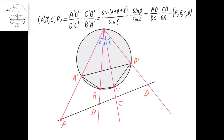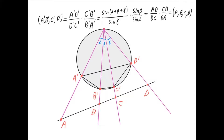And now we can apply the law of sines for each of the four segments here. We know that a prime d prime equals two times r times the sine of this angle alpha plus beta plus gamma. Similarly, c prime b prime equals two r sine of beta, d prime c prime equals two r sine of gamma, and b prime a prime equals two r sine of alpha. When we cancel out the two r's everywhere, we get that this ratio equals sine of alpha plus beta plus gamma divided by sine of gamma times sine of beta divided by sine of alpha, which is exactly the same as the cross ratio of the points a, b, c, and d that lie on a straight line.